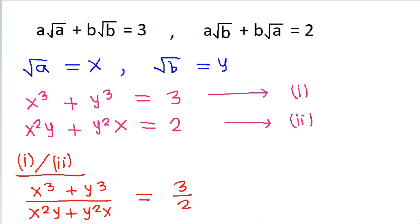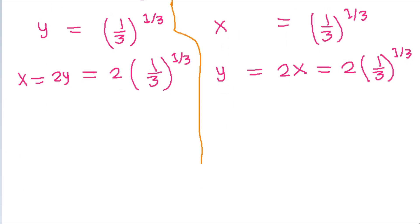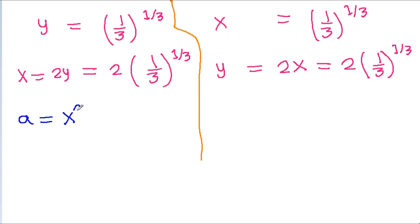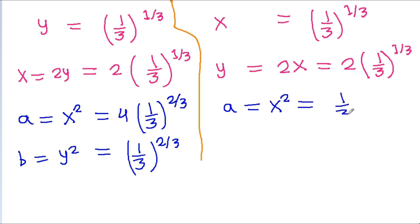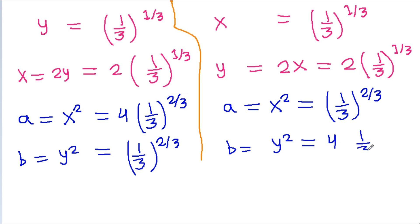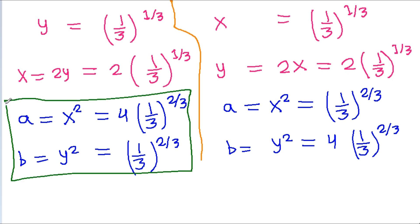Since √a equals x and √b equals y, we have a equals x squared and b equals y squared. So the two solutions are: a equals 4·(1/3)^(2/3) and b equals (1/3)^(2/3); or a equals (1/3)^(2/3) and b equals 4·(1/3)^(2/3). These are the two solutions of the given equation.